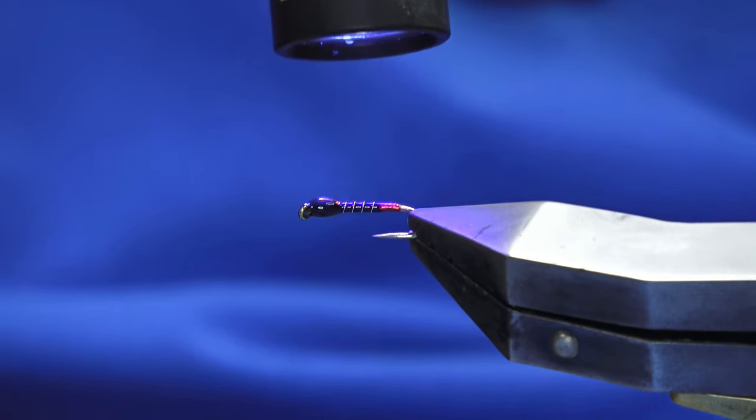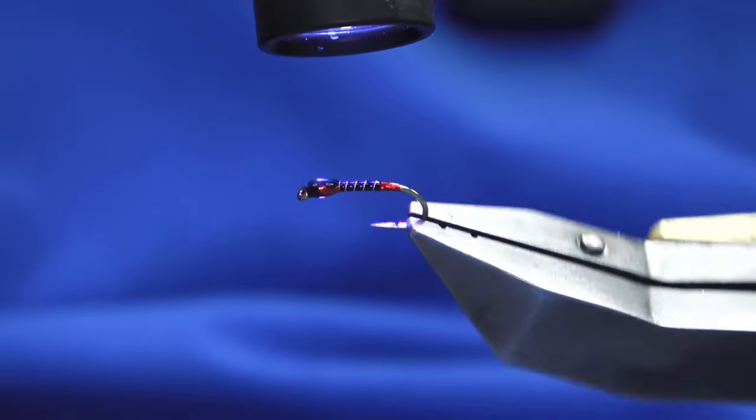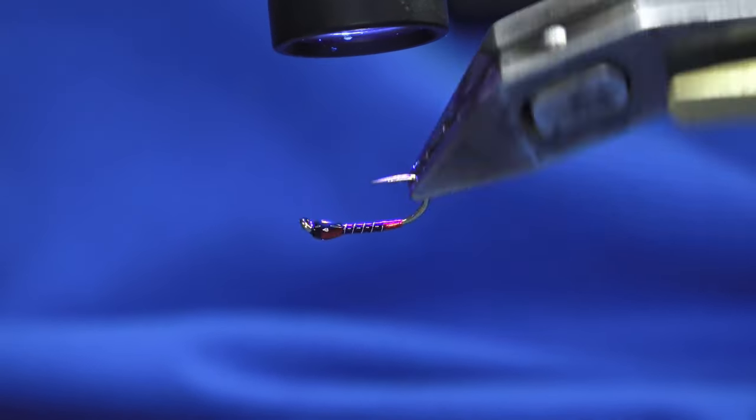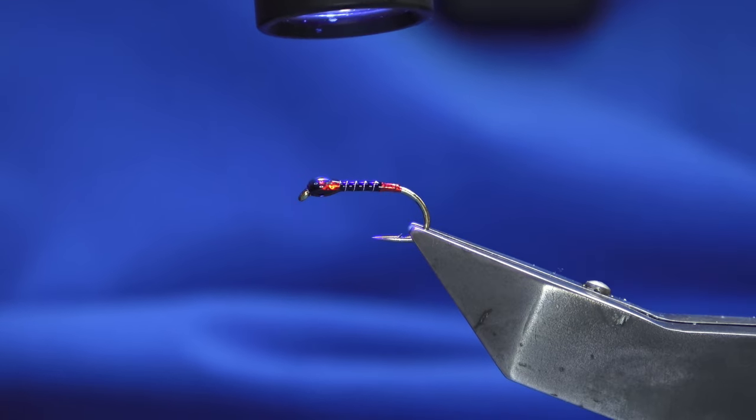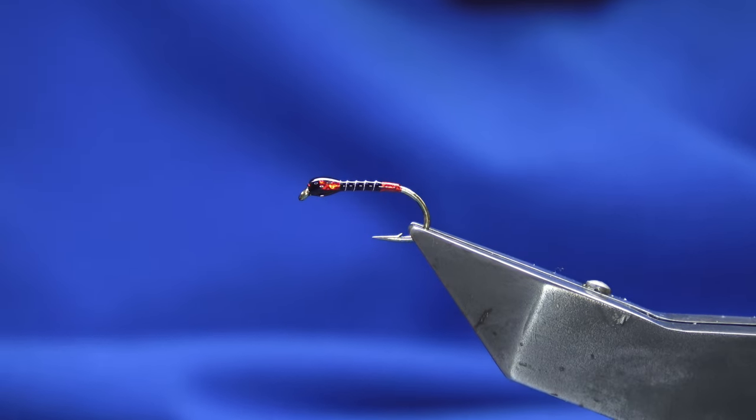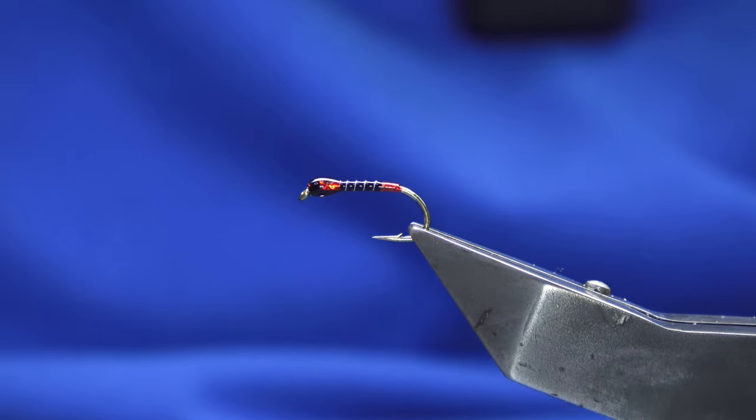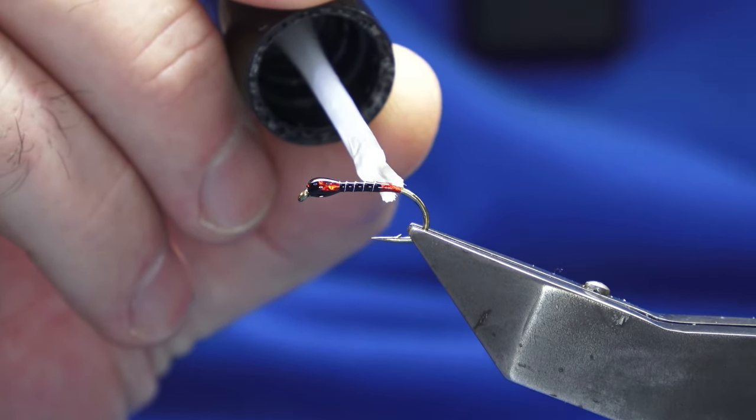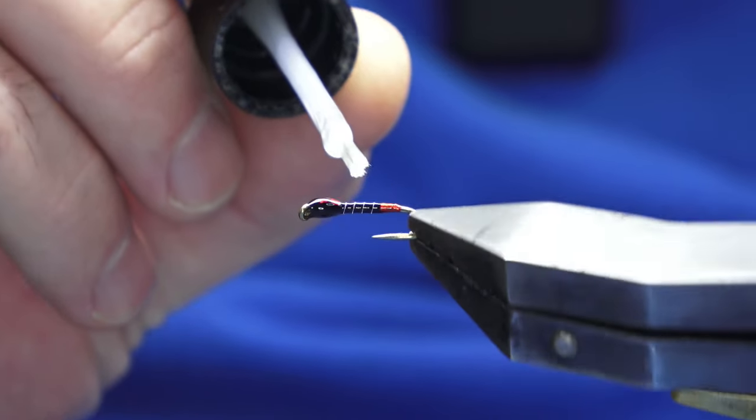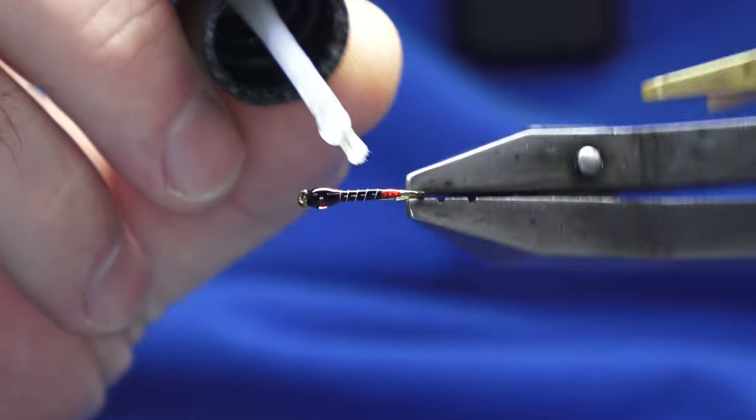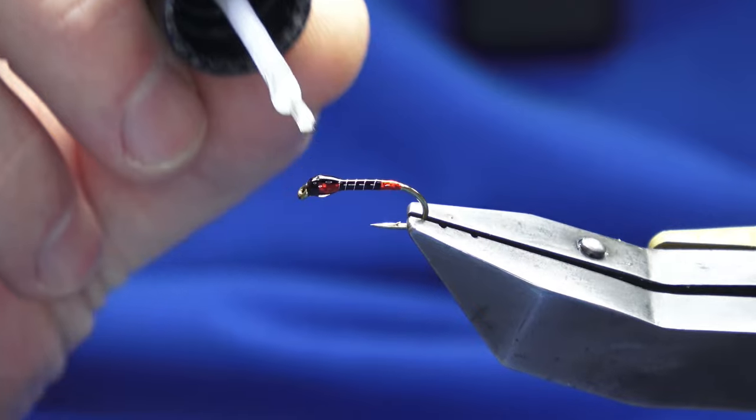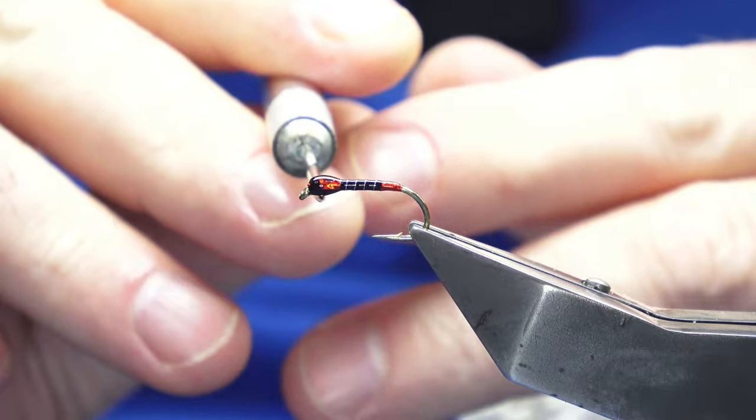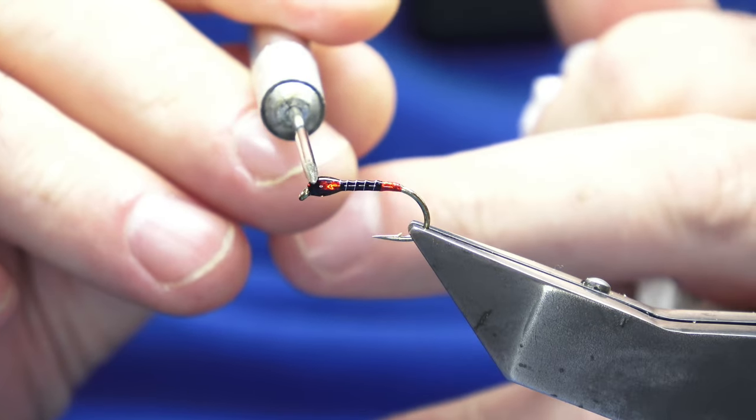It's good to have this wee pattern tied on both straight and curved hooks because the straight hooks are good for pulling. To seal the UV resin, I usually stick on two coats of varnish. This is the first coat - start at the back and work forward. I follow the same process - if I have too much on, just come in and remove it.